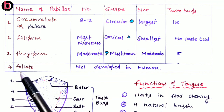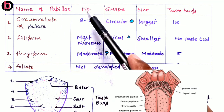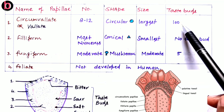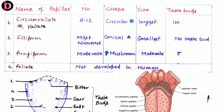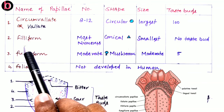The four types of papillae are: circumvallate or vallate papillae, filiform papillae, fungiform papillae, and foliate papillae. The circumvallate or vallate papillae are 8 to 12 in number, circular in shape, and are the largest. Each carries nearly 100 taste buds, which are the structures responsible for recognition and identification of particular tastes. In the diagram, the circumvallate papillae are located towards the posterior side of the tongue.